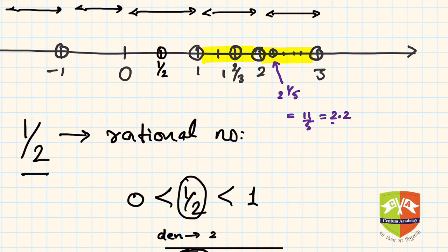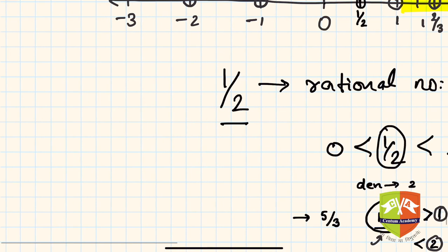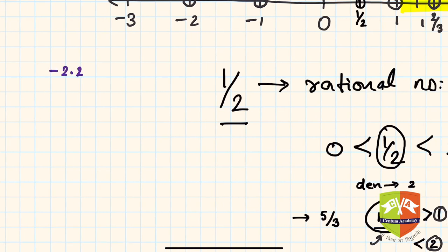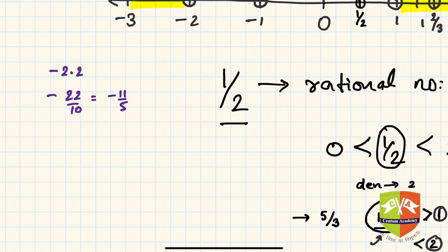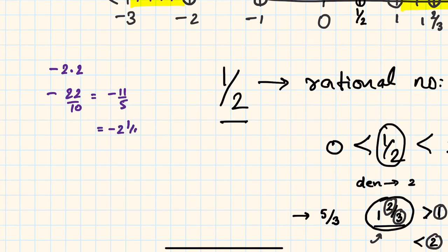Similarly you can do this for negative numbers. For example, let us take minus two point two. It is somewhere between minus three and minus two. It is simply minus twenty-two by ten, which equals minus eleven by five. So you divide the segment between minus three and minus two into five parts — one, two, three, and four — giving us minus two whole one upon five.